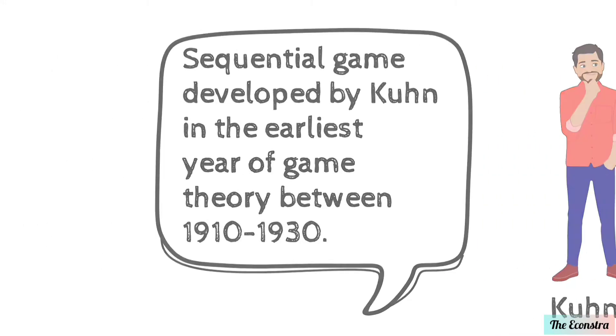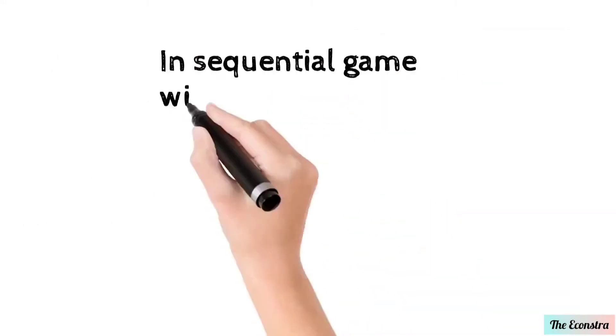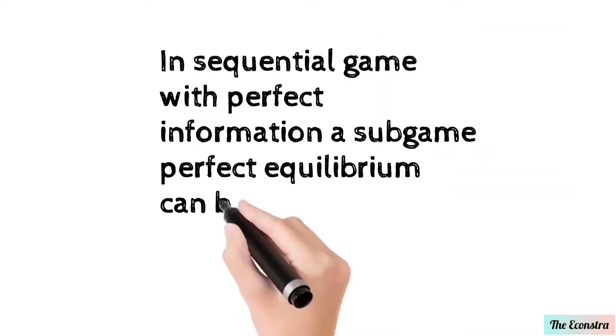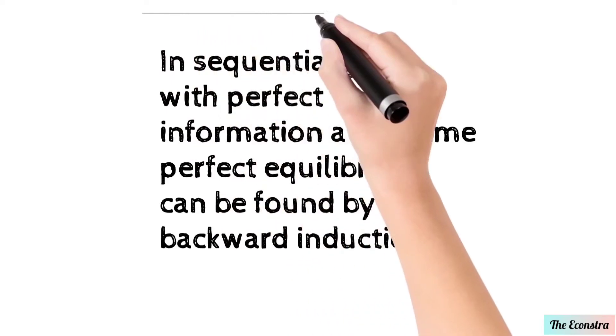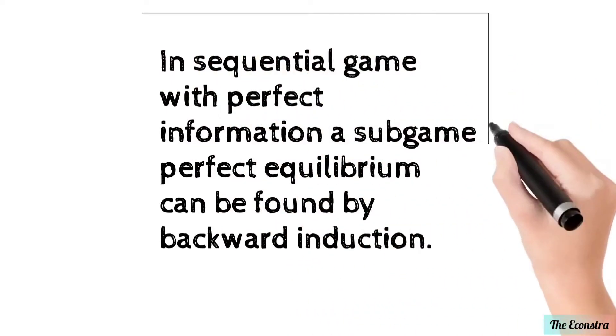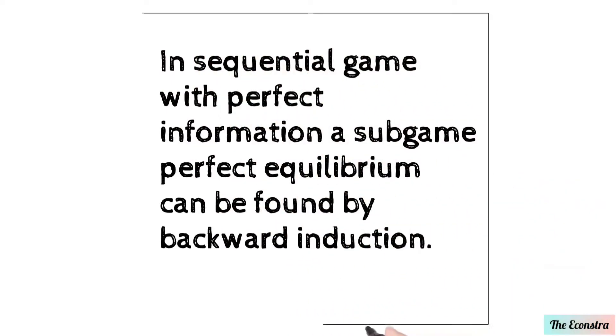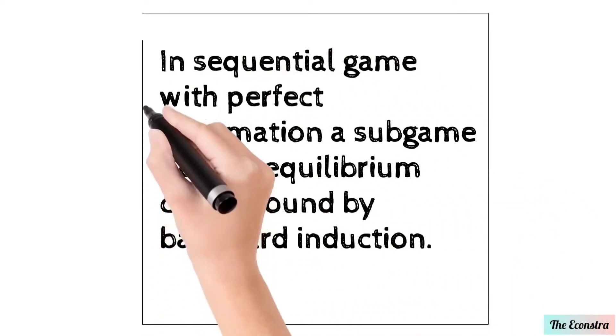In sequential games with perfect information, the subgame perfect equilibrium can be found by backward induction.